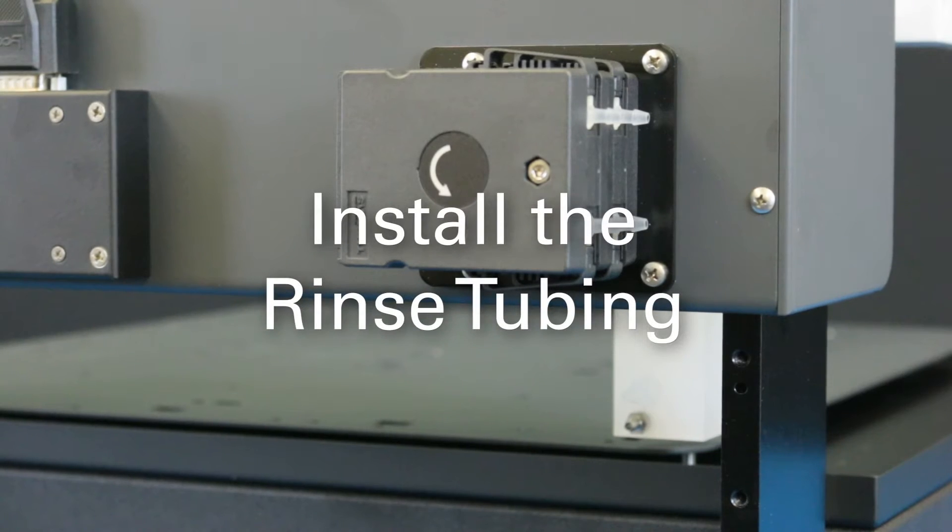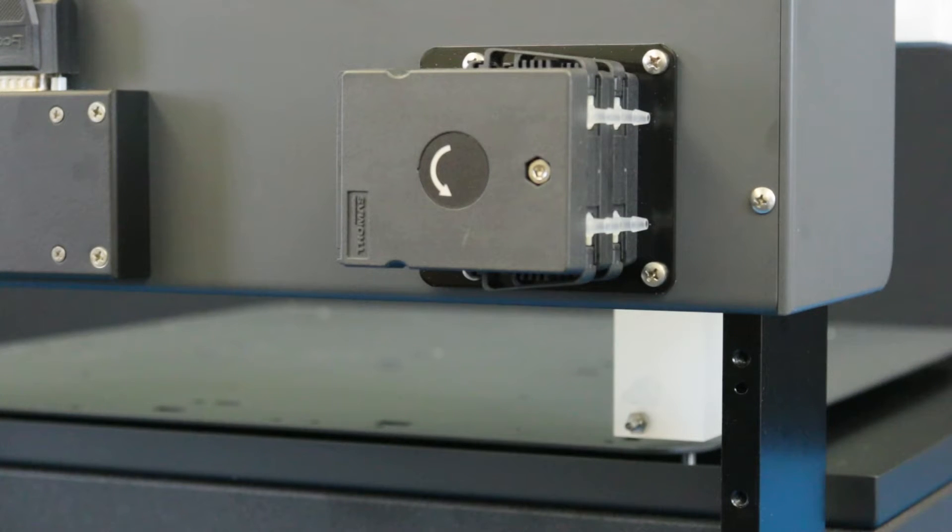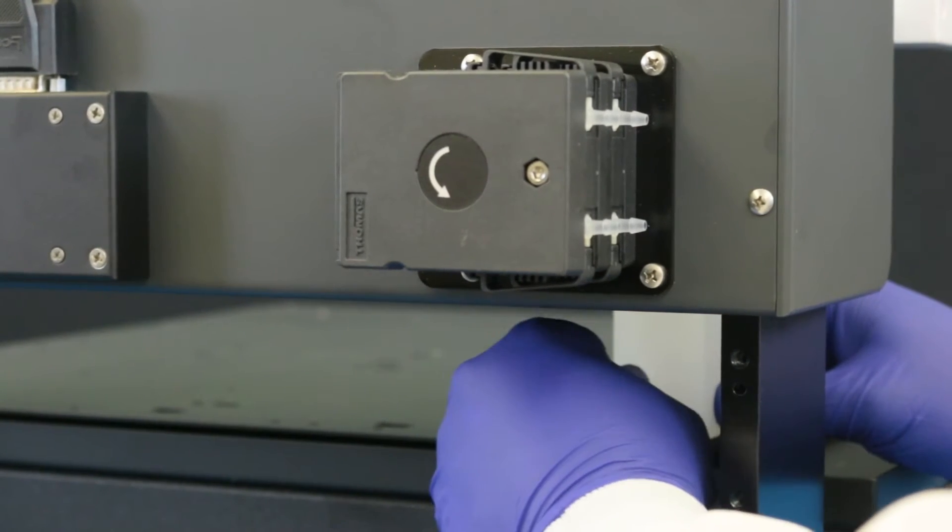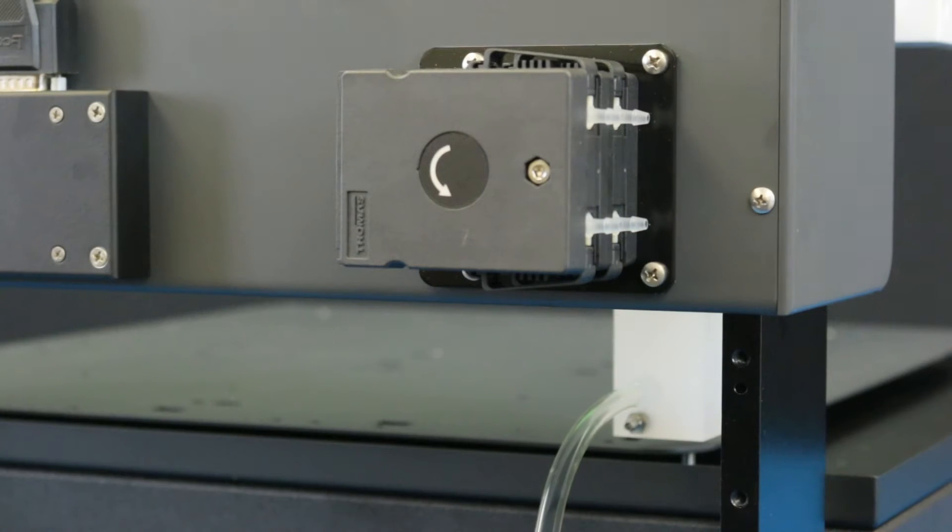Install the rinse tubing. Find the short piece of 3/16 inch waste tubing. Connect the waste tubing to the upper fitting of the rinse station. Direct the other end to an appropriate waste container.